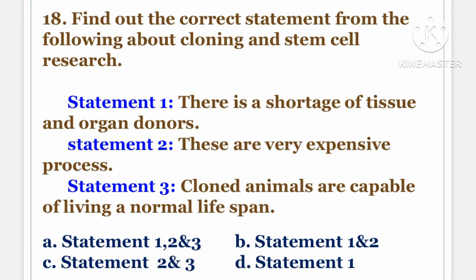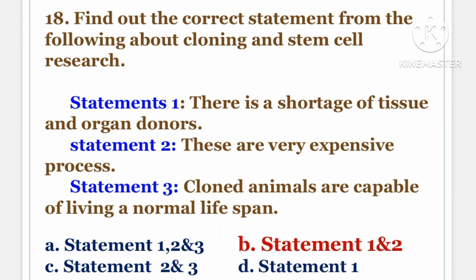Next question. Find out the correct statement from the following about cloning and stem cell research. Statement 1: There is a shortage of tissue and organ donors. Statement 2: These are very expensive processes. Statement 3: Cloned animals are capable of living a normal lifespan. Options: A. Statements 1, 2 and 3, B. Statements 1 and 2, C. Statements 2 and 3, D. Statement 1. And the answer is B. Statements 1 and 2.